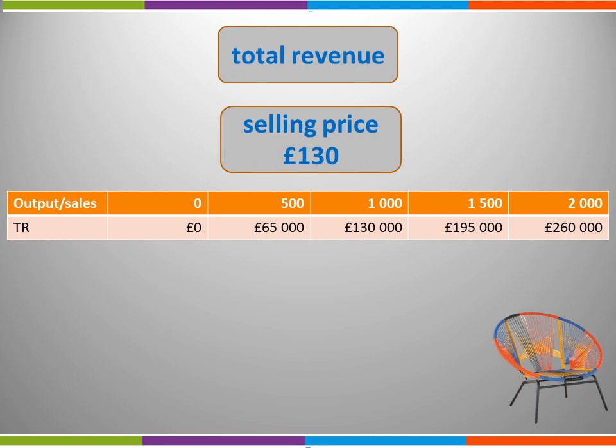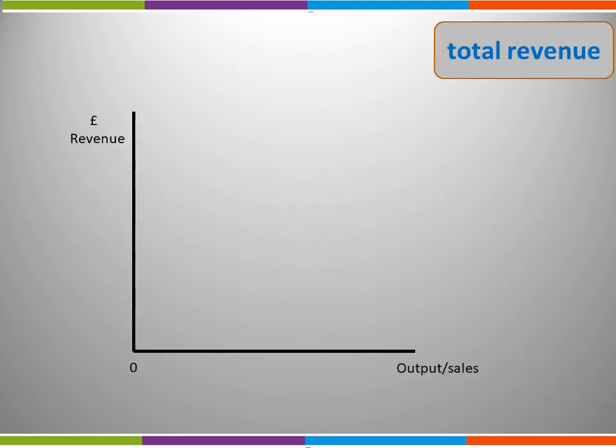Here we have shown this in a table of numerical information, but we can also show this information graphically. In order to show total revenue graphically, we first of all have to label our axes. On our vertical axis, we have revenue shown in pounds, and on our horizontal axis, we have our sales.